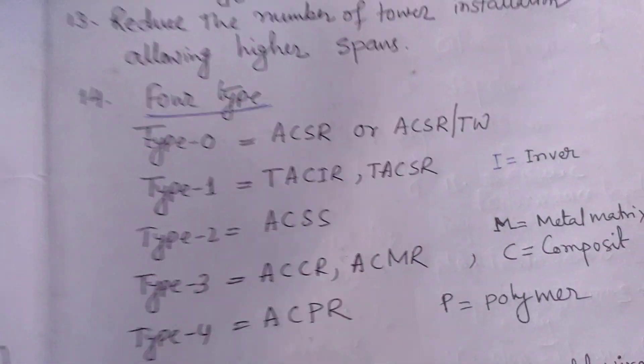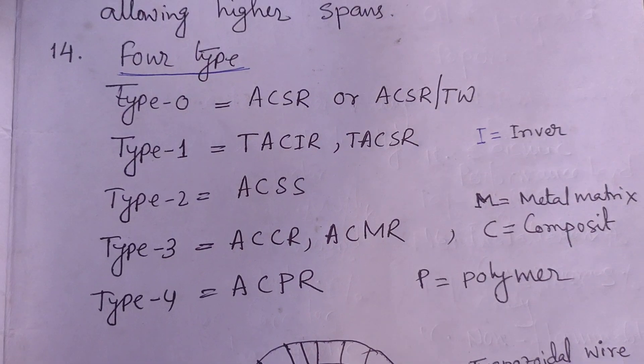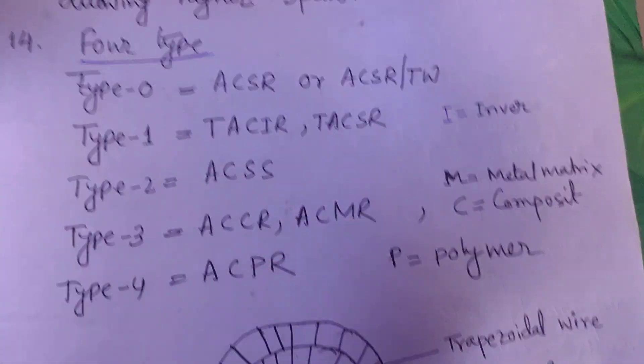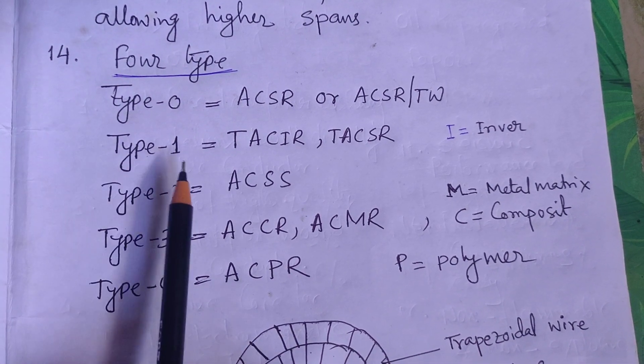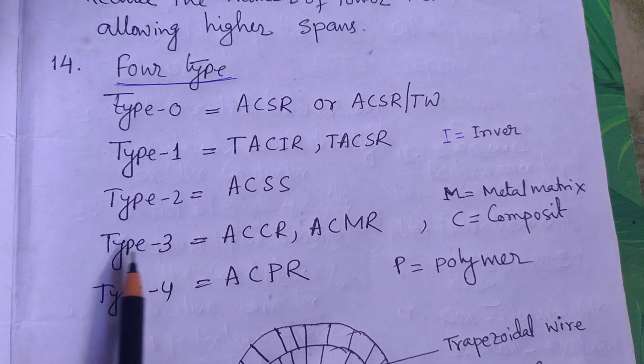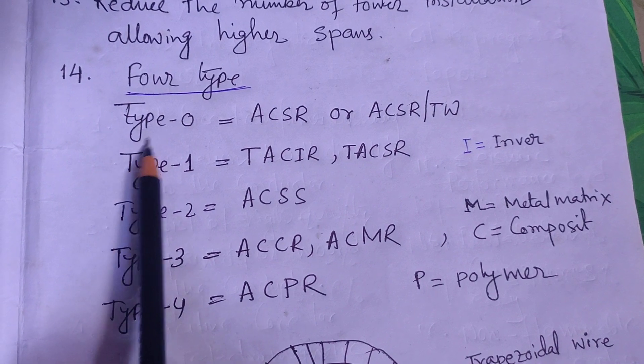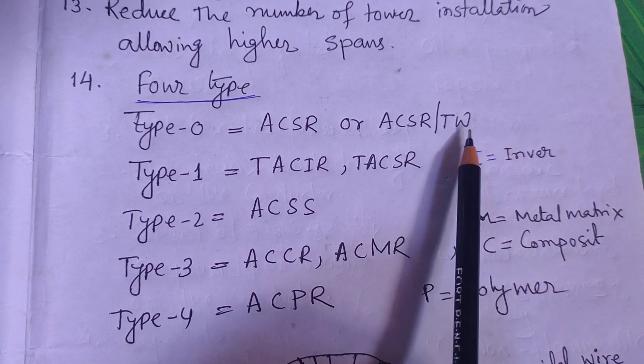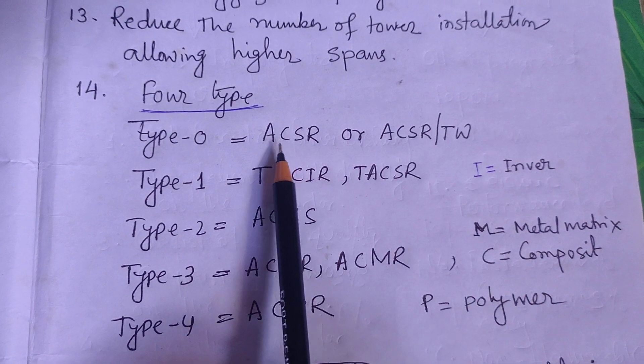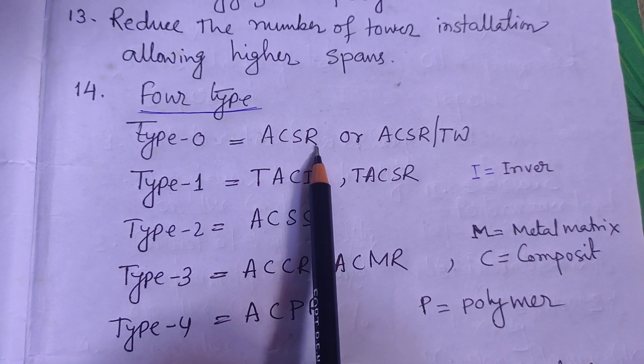There are four types of HTLS conductors nowadays we are using: Type 0, Type 1, Type 2, Type 3, and Type 4. Type 0 belongs to ACSR and ACSRTW - Aluminum Conductor Steel Reinforced.